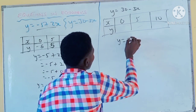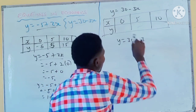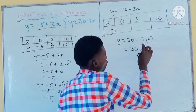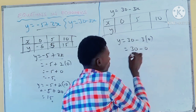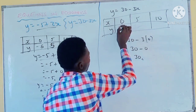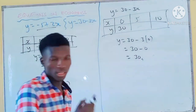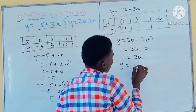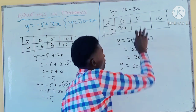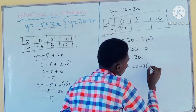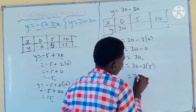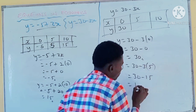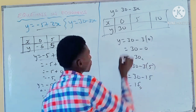y equals 30 minus 3x. When x is 0: 30 minus 3 times 0 is 0, so 30 minus 0 is 30. You have 30. When x is 5: anywhere you see x, put 5. So 30 minus 3 times 5 is 15. 30 minus 15 is 15. You put 15.